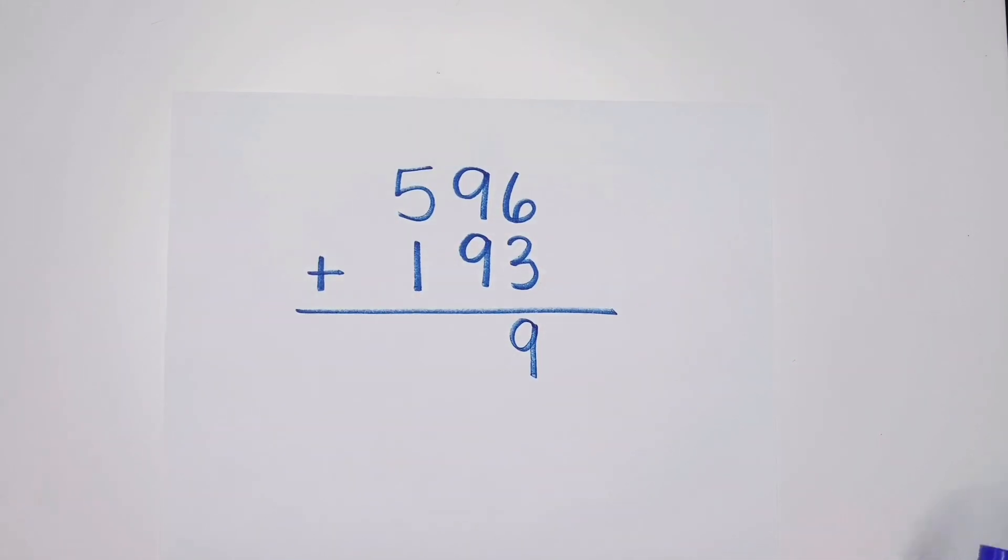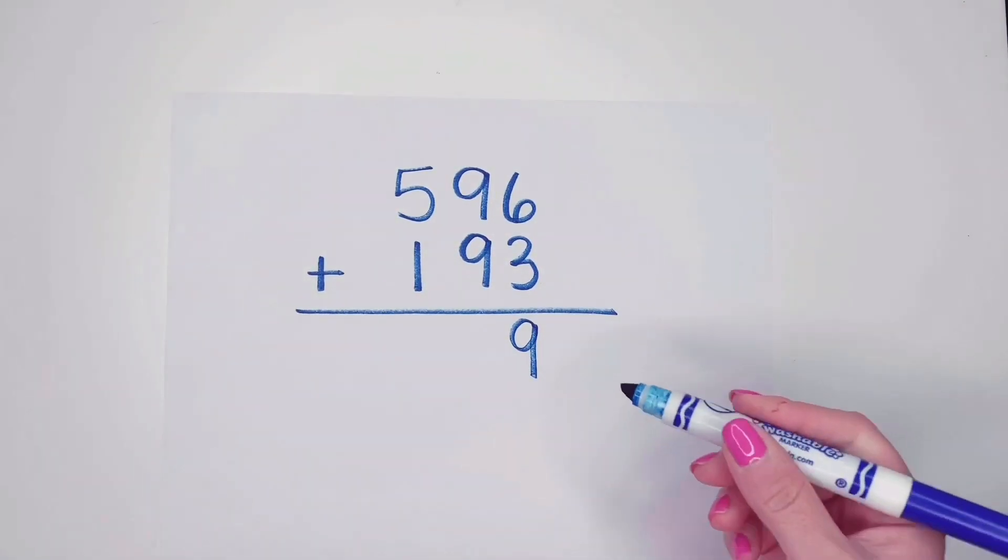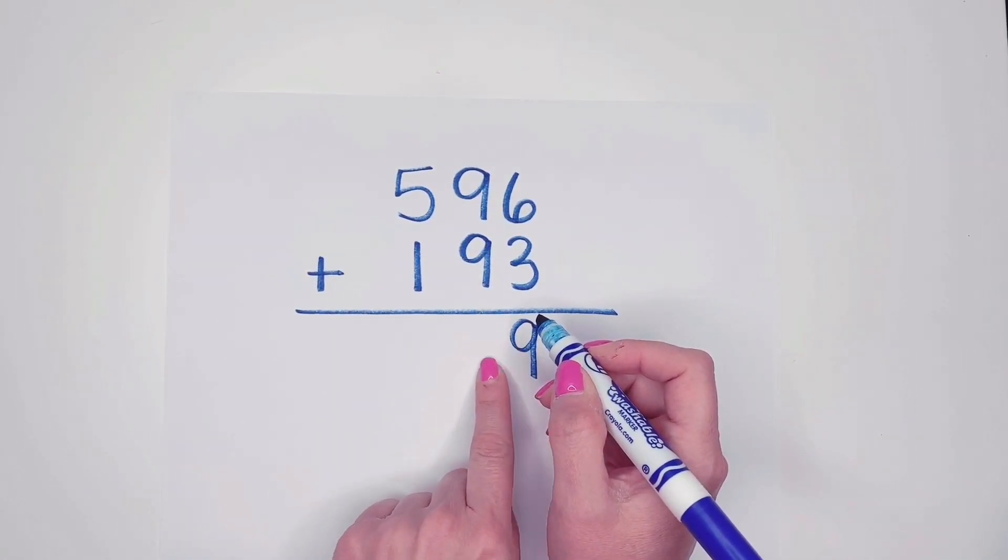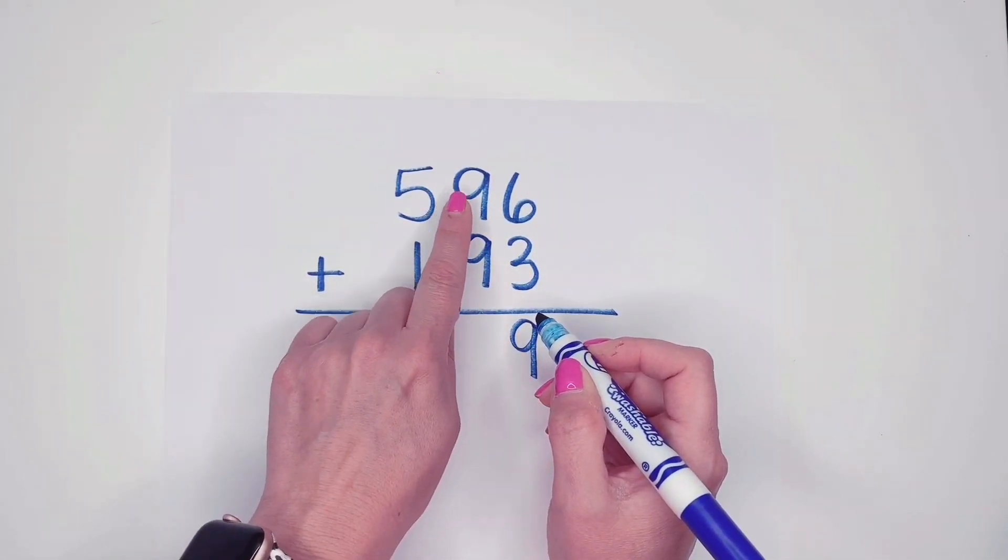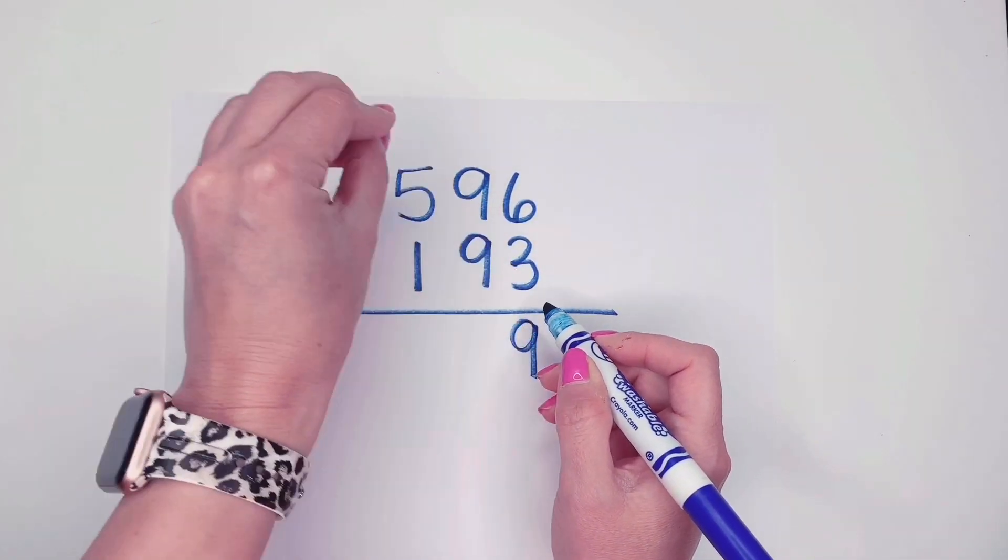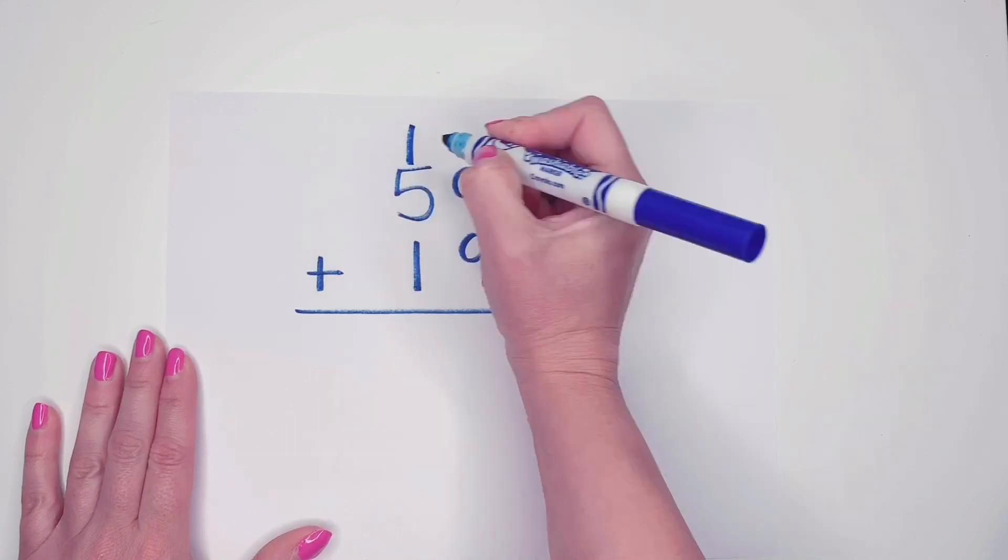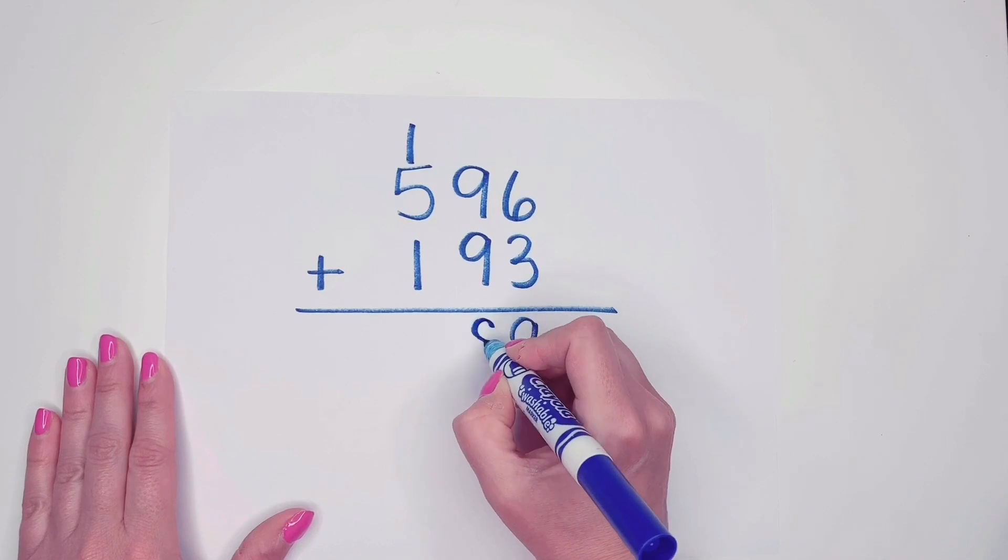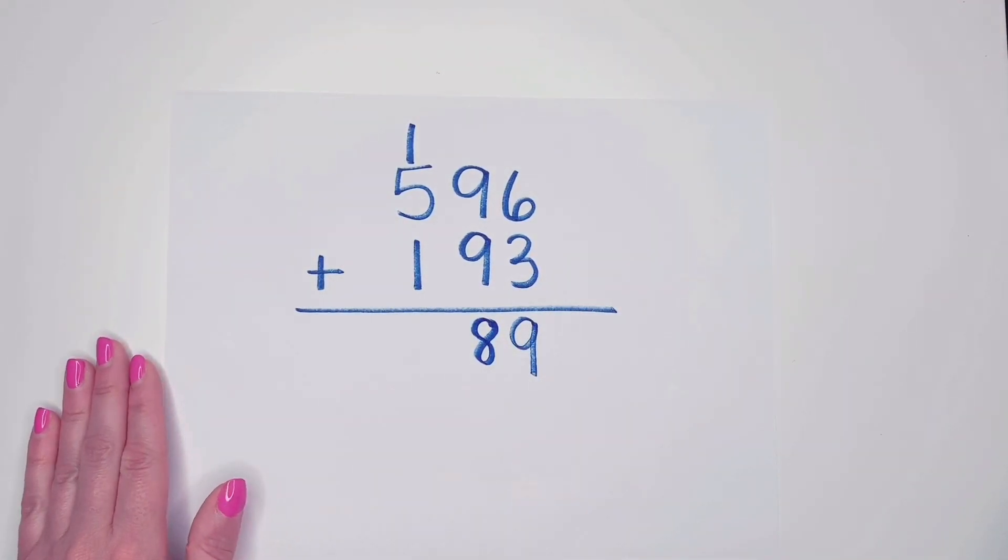Nine plus nine. Well, I know my double stacks. So I know nine plus nine is eighteen. So we can't put eighteen here. We can't put eighteen tens here. Because remember, this is nine tens plus nine tens. We can't put eighteen tens here. So we have to take ten tens up above and give it to the hundreds. And then we can leave our eight tens down below.